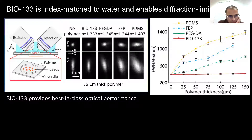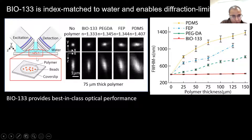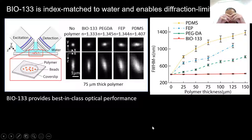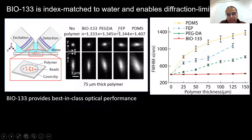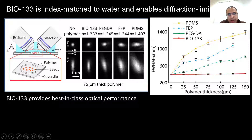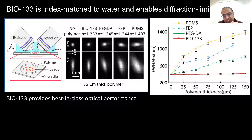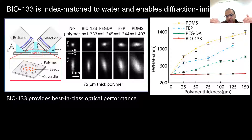Going back to the Diaspim light sheet microscope, if you image beads through a layer of different polymers, you can see different aberrations. Without polymer the bead appears diffraction-limited, but through PDMS it appears badly aberrated. The thicker the polymer, the worse the aberration. Even through FEP or PEGDA, which are close to the refractive index of water, you can still observe aberrations. But through Bio-133 it's as if the polymer isn't there—the refractive index is identical to water to the third decimal place—providing best-in-class performance.